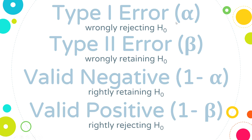So a type one error here is basically arresting an innocent person. A type two error would be if I retain the null hypothesis — concluding he is sober — but I was wrong to do so. So he was really drunk, but I concluded he was sober and let him go. This would be letting a guilty person get away.